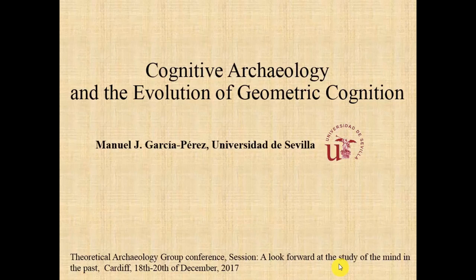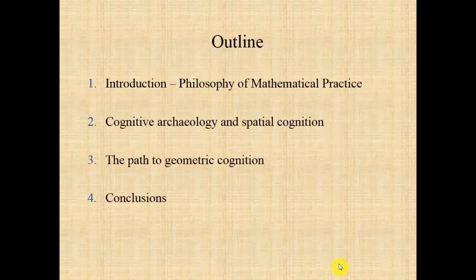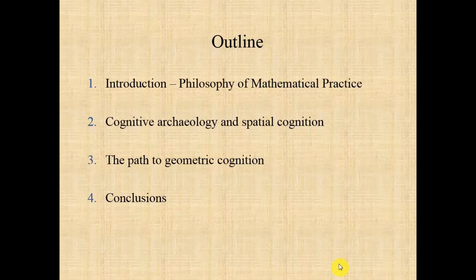In this talk I would like to show how cognitive archaeology could help us to understand the evolution of geometric cognition. In order to show that, I will first give a brief introduction about the philosophy of mathematical practice and assumptions related with my case study. Then I will show how cognitive archaeology has usually studied the evolution of spatial cognition, and in the third part I will show how this spatial cognition can be connected with geometric cognition, and finally I will draw some conclusions.